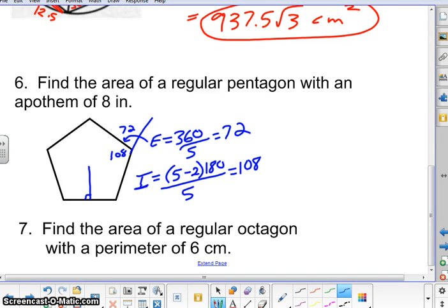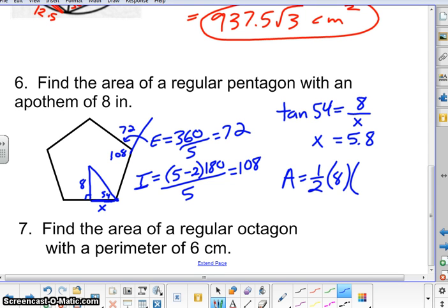So what they gave us was the apothem is 8. And if we're trying to find the area of this, we need to know what the side is. So let's go ahead and form our radius, and then know that that's 54 degrees right here. And then the parts that we know are the 8, and we do not know the X, but we need to know that. So it looks like that's opposite and adjacent, which is tangent of 54 equals opposite over adjacent. So if you solve for X, you're going to end up with 5.8. Go ahead and round that to the nearest tenth. And then just plug everything in. Apothem was 8, and the perimeter would be 5.8 times 2, so that's 11.6 times 5 for a final answer of 232 inches squared.